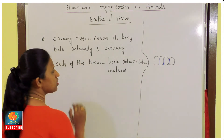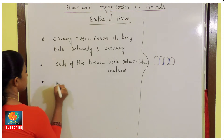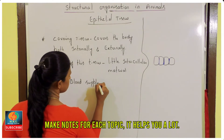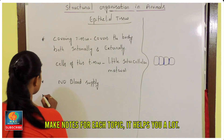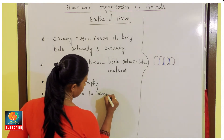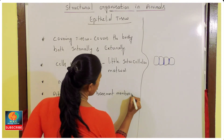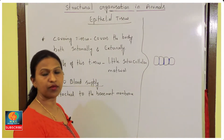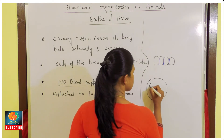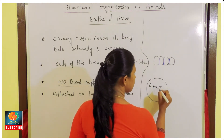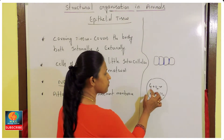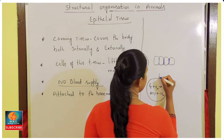A cell requires nourishment — glucose and oxygen — to produce energy (ATP), and releases carbon dioxide as a by-product. Blood capillaries supply glucose and oxygen. So how can epithelial tissue survive without blood supply? All epithelial cells are attached to a non-cellular substance known as the basement membrane. Below this basement membrane there is connective tissue present.